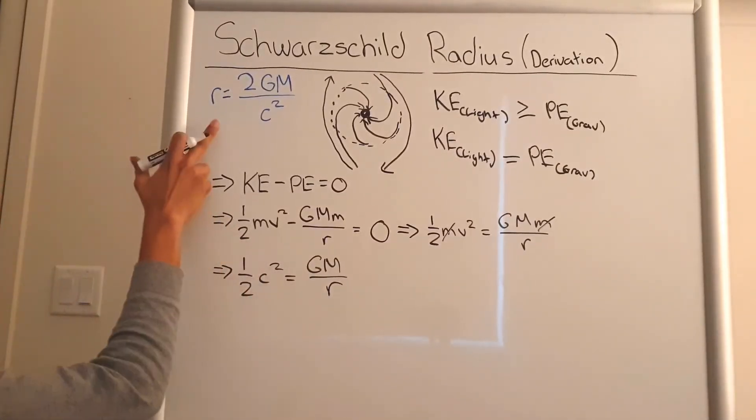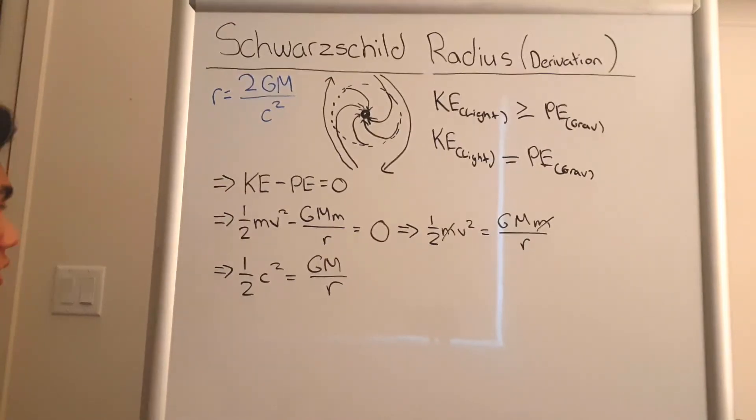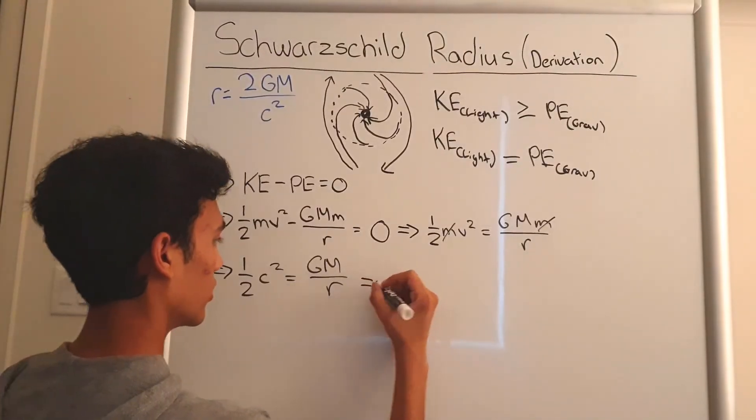Now these terms are very similar to the terms that we have in the Schwarzschild radius equation. So we can just rearrange this and get the final equation.